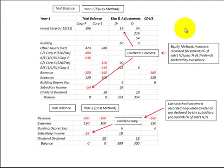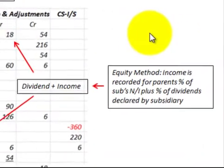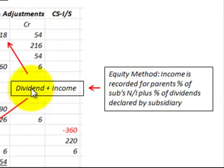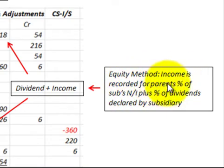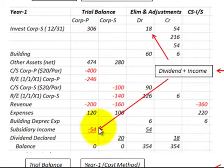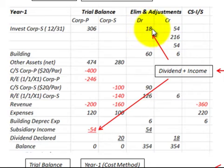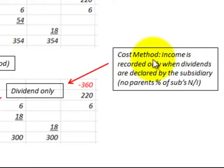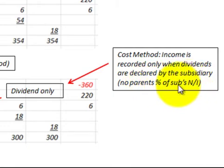The other major difference between the cost method and equity method for consolidation is how dividends and income are recorded. Under the equity method, income is recorded for the parent's percent of the sub's net income plus the percent of dividends declared by the subsidiary. On the worksheet, subsidiary income is shown at $54,000 for the parent, and dividends are debited to the investment in the subsidiary for $18,000. Under the cost method, income is recorded only when dividends are declared by the subsidiary — no parent's percent of the sub's net income is recorded — so subsidiary income on the worksheet is based only on the dividends declared by the sub.